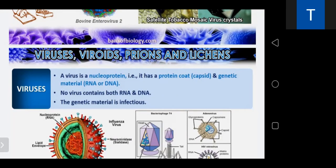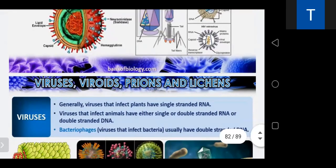Different viruses have different shapes — spherical, cubical, helical, polyhedral. Viruses have a protein coat called the capsid and a genetic material that is either DNA or RNA, but not both. The envelope is an outer covering present in certain viruses, made up of protein of viral origin and lipid and carbohydrate of host origin. Some viruses have spikes or outgrowths — examples of enveloped viruses include HIV, herpes virus, and vaccinia virus.